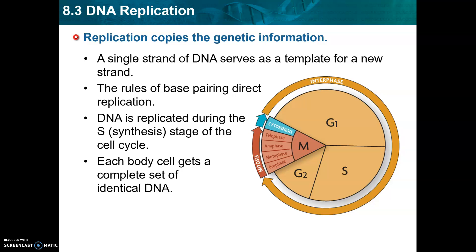I want you to keep a couple of things in mind during this section. A single DNA strand is going to serve as a template for a new DNA strand. And Chargaff's rules apply for this section, meaning thymine bonds with adenine and cytosine bonds with guanine. The result of this stage is going to be that each body cell gets a complete set of identical DNA.